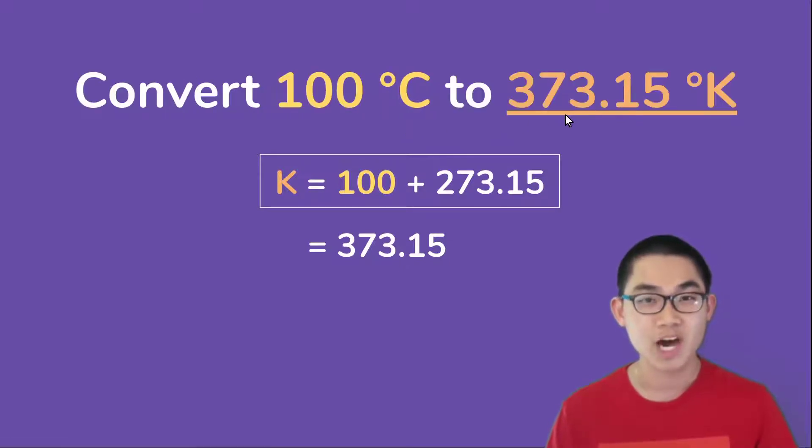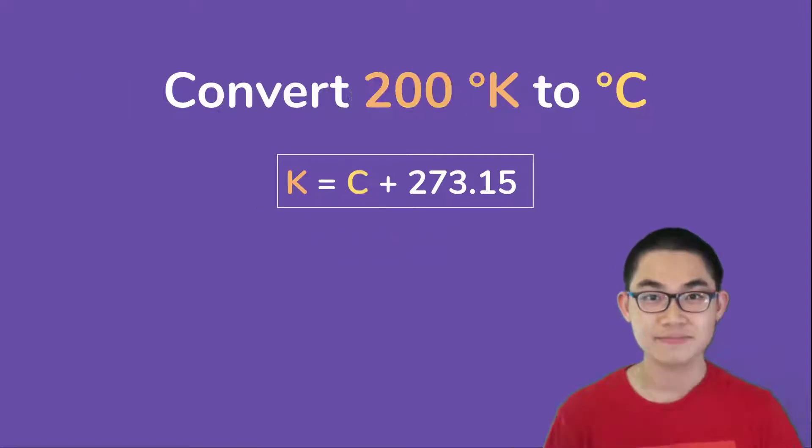Now let's try doing a different problem. This time we want to convert 200 degrees Kelvin into Celsius. So using the same formula, we want to solve for C, and we know that K is 200.